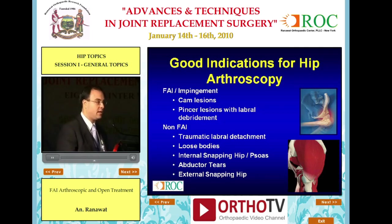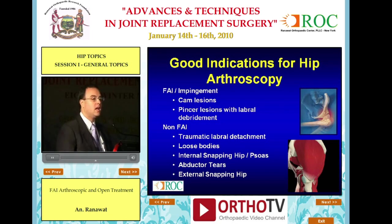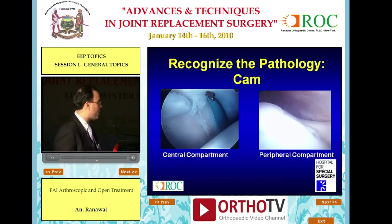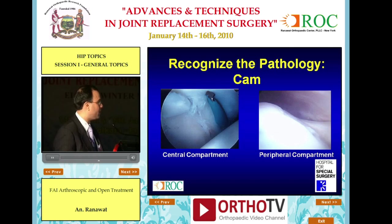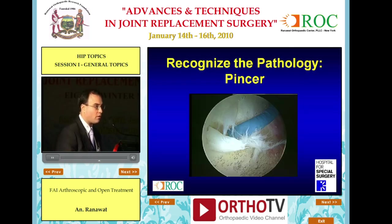The good indications for hip arthroscopy are a large anterolateral CAM lesion. Some pincer lesions are also treatable. Non-FAI pathologies such as PVNS, loose bodies, and a host of other things can also be treated arthroscopically. You want to learn how to diagnose the pathology — this is the central compartment where you can see chondral delamination. Then you can switch into the peripheral compartment, out of traction, where you can see the large CAM lesion. This is the vincula, which is the blood supply inferiorly at roughly the six o'clock position. A classic pincer lesion shows less chondral delamination but more labral pathology.